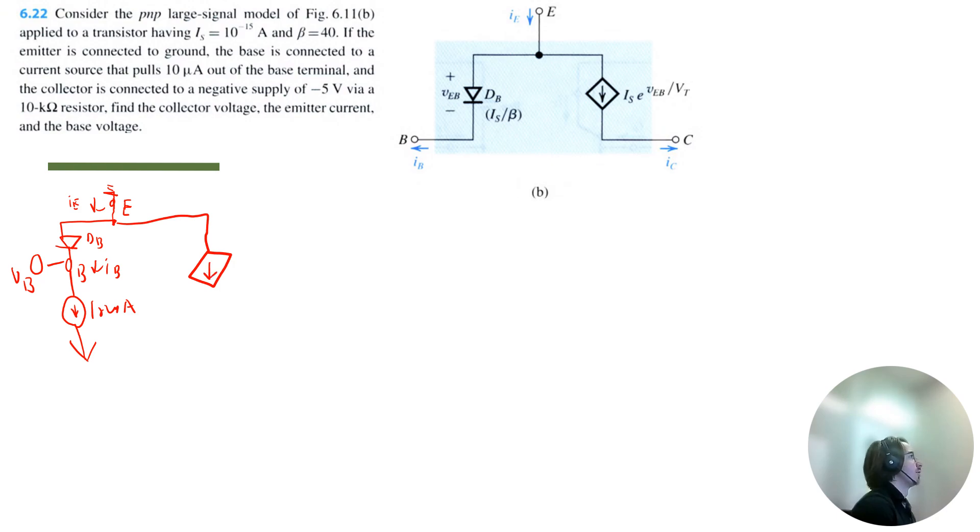And then lastly, we have the collector side. So first we have that current source. VV divided by VT. And then the collector is right here. And then it's being connected to this 10 kilo ohm resistor, and then a negative 5 volt source. And we will denote the current to right here, I see. So this is the schematic of the circuit that's being described.